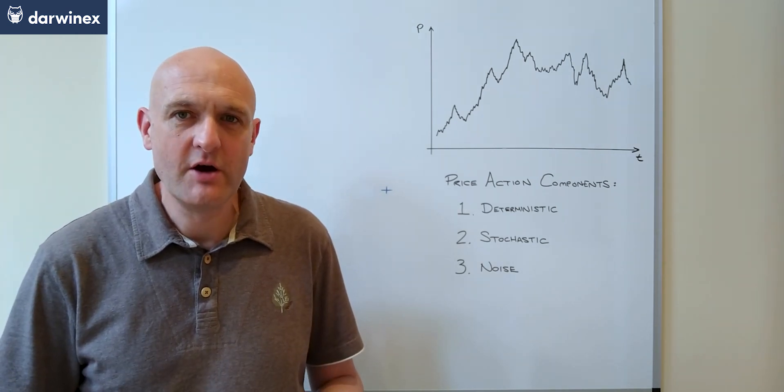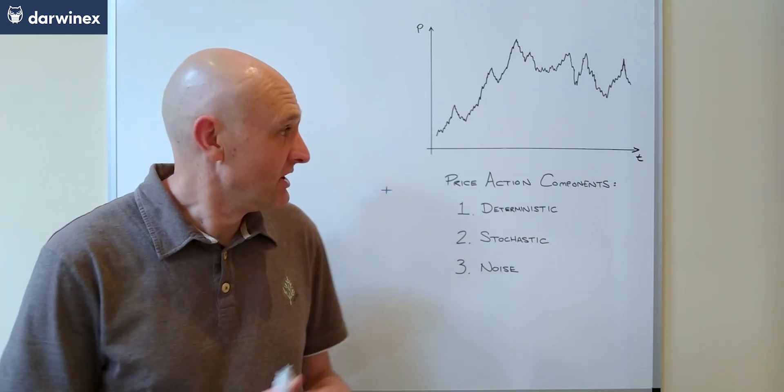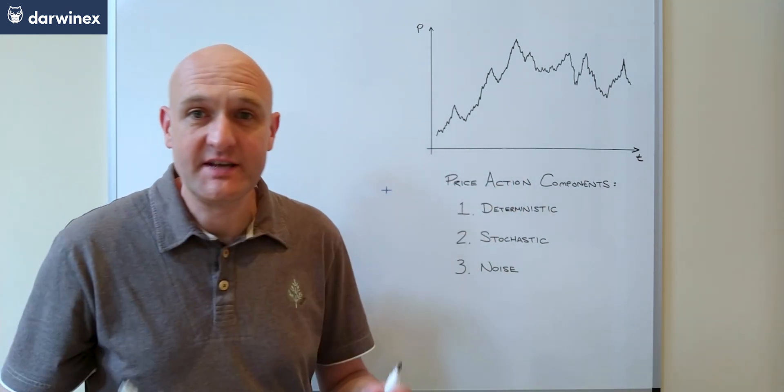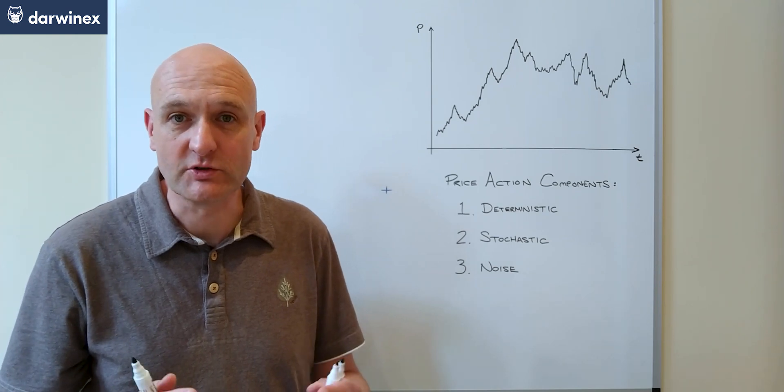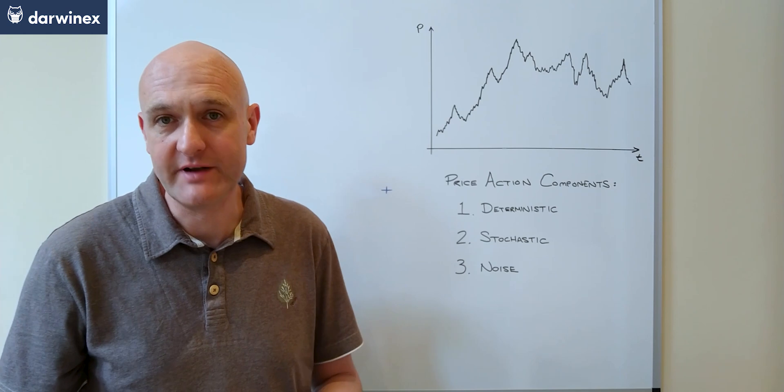Now these three different components are all in play at the same time. So in this chart, for every time T, all of the three components will have influence what's just happened in the price, and also determine where the price will go next.